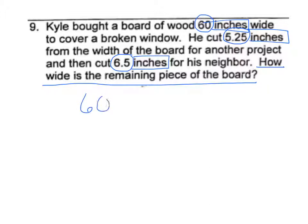So he started with 60 and he took away 5.25 plus 6.5. So we can add those two together, 5.25 plus 6.5. So he cut out 11.75 inches, so we're going to subtract that from 60.